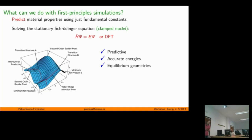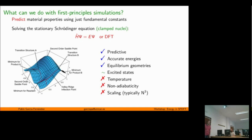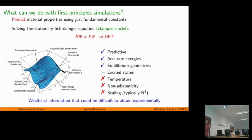We can also predict barriers — we can calculate barriers separately — which gives us an idea of the kind of perturbation needed to alter the phase of the system. Very importantly, they are predictive, in contrast with other semi-empirical methods where you need to input a lot of information from experiments. The big problems appear when you want to include temperature, non-adiabatic problems, or large systems, since the scaling is usually N³, which limits the number of atoms.